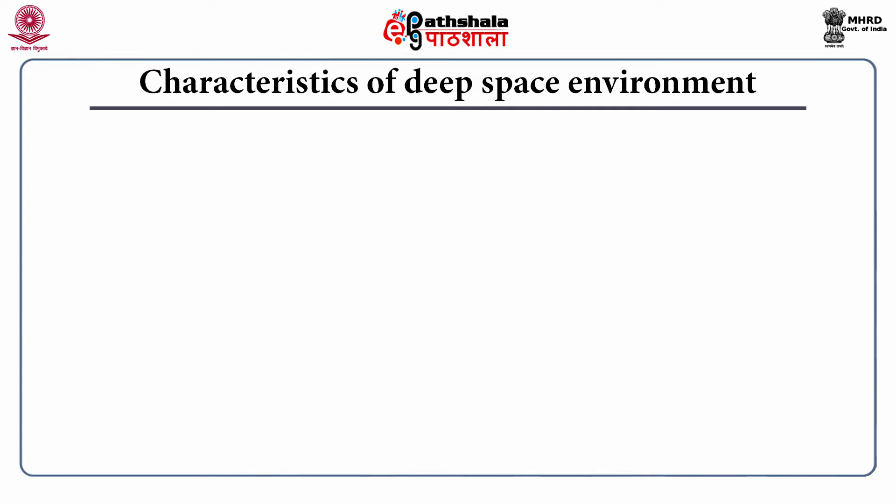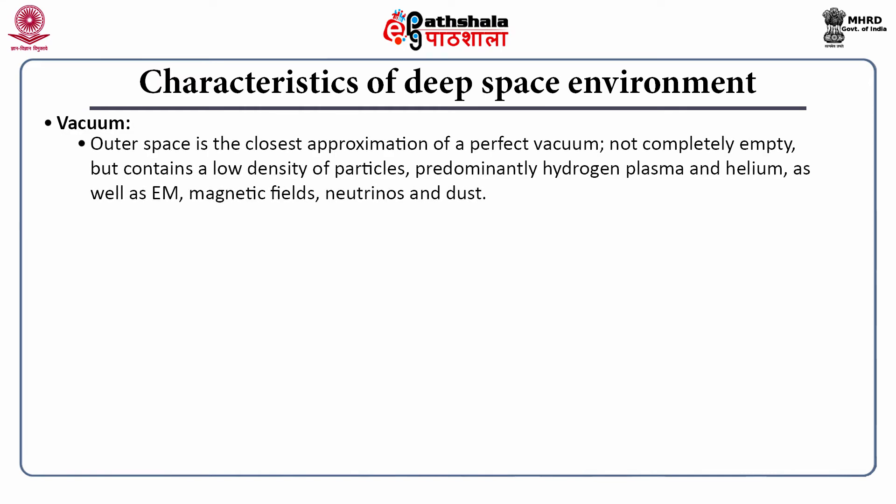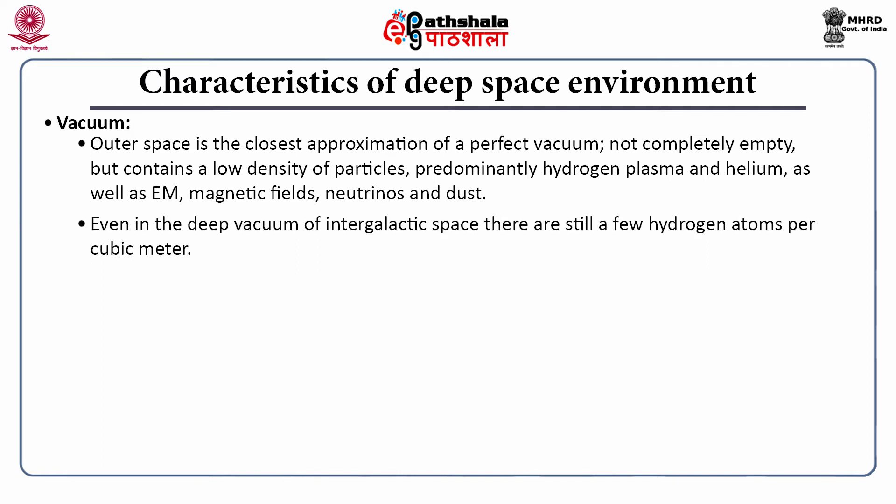Let us discuss some characteristics of the deep space environment. First is vacuum. Outer space is the closest approximation of a perfect vacuum. It is not completely empty, but contains a low density of particles — predominantly hydrogen plasma and helium — as well as some electromagnetic radiation, magnetic fields, neutrinos and dust. Even in the deep vacuum of intergalactic space, you can find a few hydrogen atoms per cubic meter.